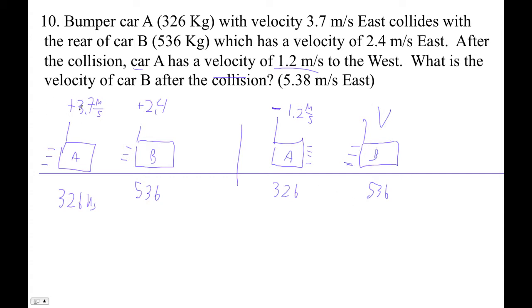Okay, so before the collision, this guy's going east. This guy's also going east. 326, 536. After the collision, it bounces off somehow. It ends up going backwards, so I'm going to make that a negative 1.2.